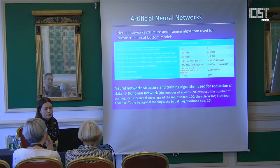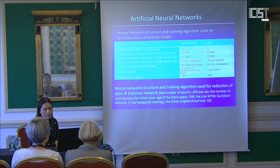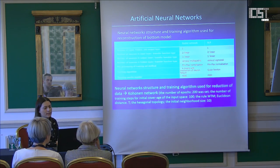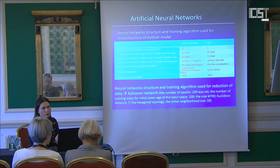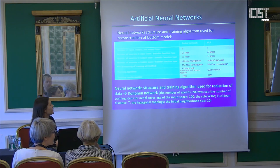When the number of hidden neurons equals the number of training data, the network can be used as an interpolator. By decreasing the number of hidden neurons, the network becomes an approximator. A similar situation applies to the multi-layer perceptron, where the number of hidden neurons determines the error of surface approximation. In the case of large bathymetric point data, the Kohonen network may be used during reduction.